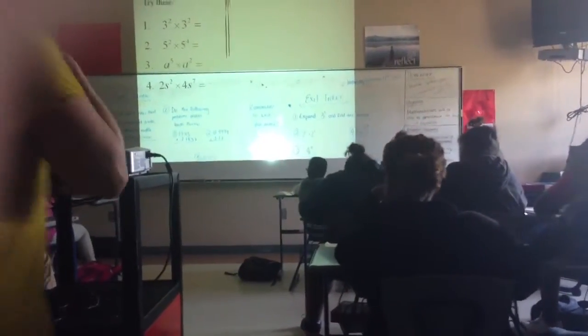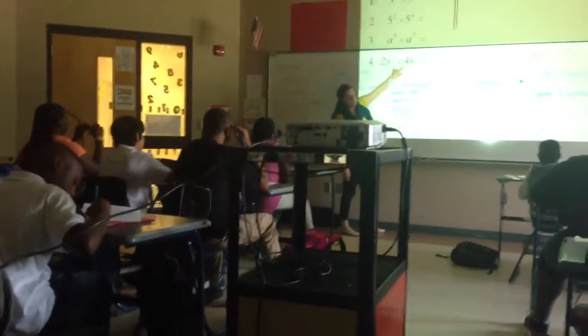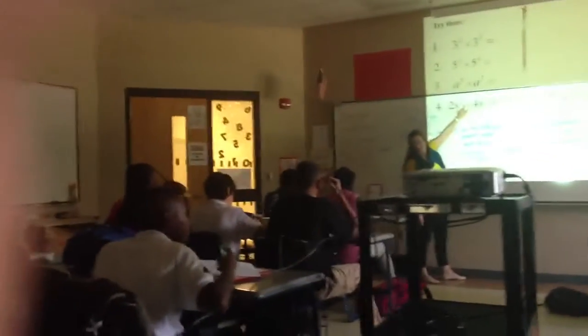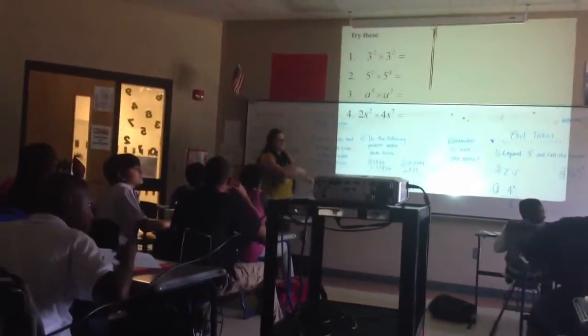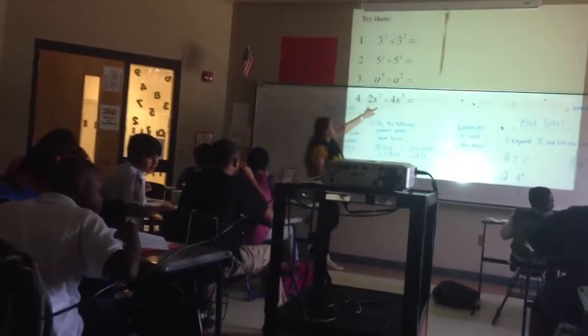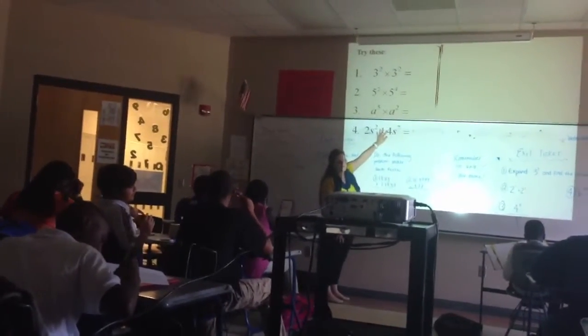So this one is a little different. We have S — S is the base here. And what are my exponents? Two and seven. So we have two of the same bases. You're still going to add the exponents of the bases.